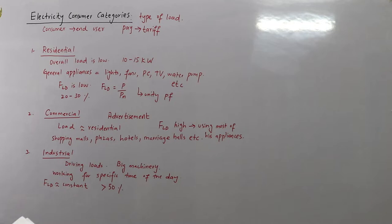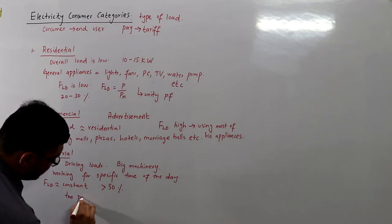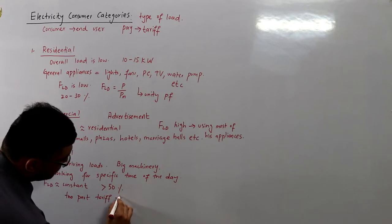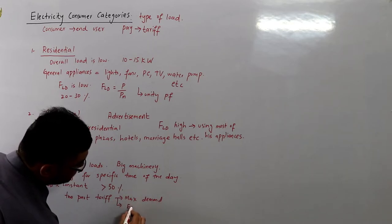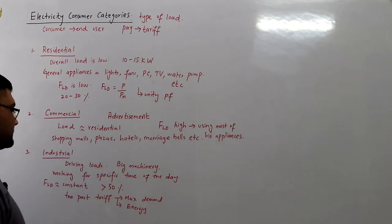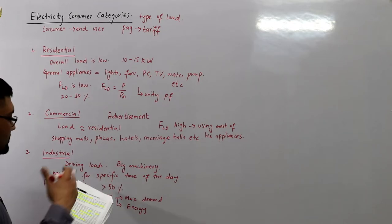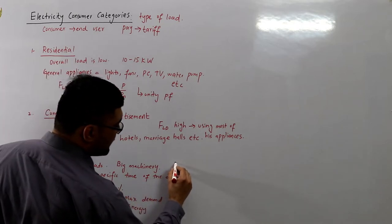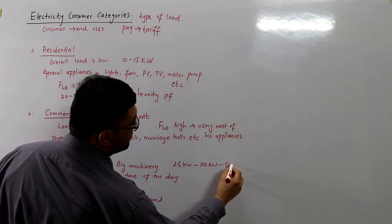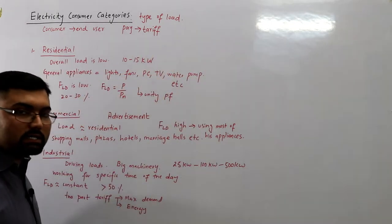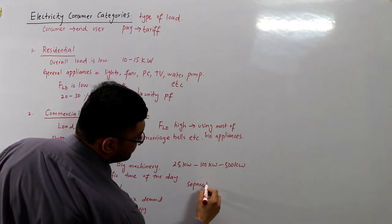Industrial consumers are charged on a two-part tariff: one part based on maximum demand, and the second based on energy units consumed. The load ranges from small (up to 25 kW), to medium (up to 100 kW), to large industries (up to 500 kW).